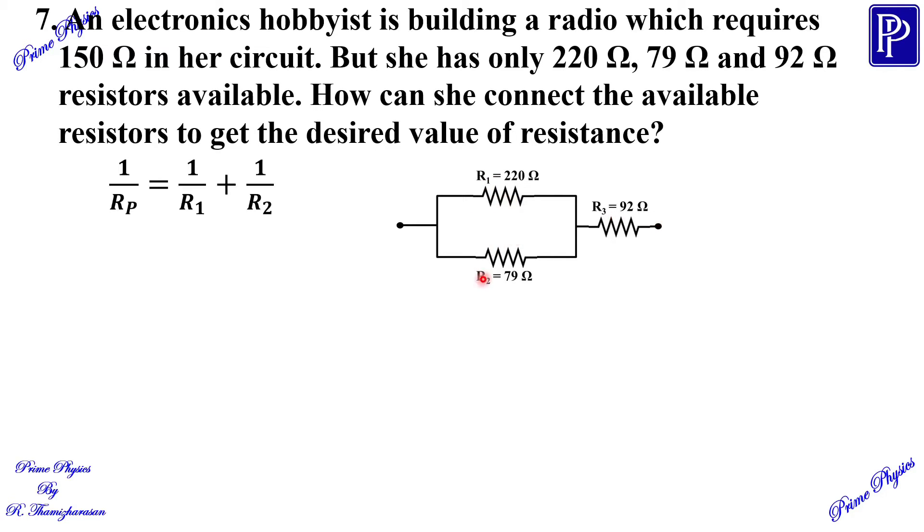Now, R1 and R2 are in parallel. The resultant resistance is Rp. The formula is 1/Rp = 1/R1 + 1/R2. Substituting the values, R1 is 220 and R2 is 79.